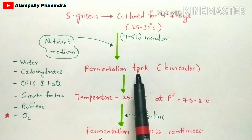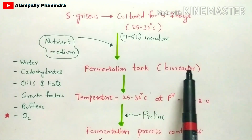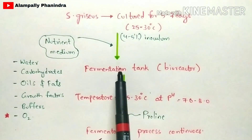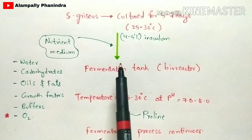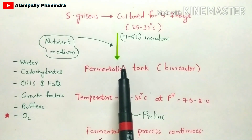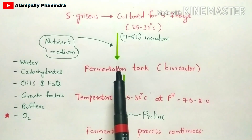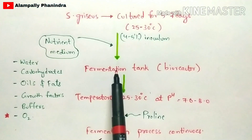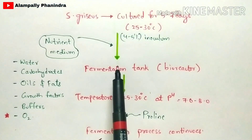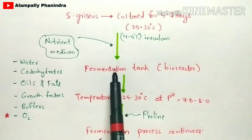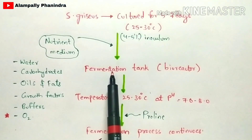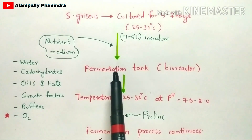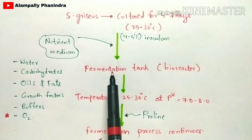All these ingredients are added to the fermentation tank, and the tank is switched on with electricity supplied to it. Agitation is performed: the bioreactor contains a motor with blades that rotate, so that the primary metabolites get converted to secondary metabolites, enabling the production of streptomycin.